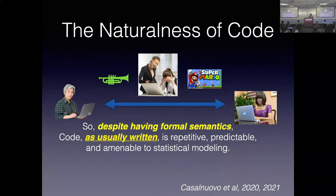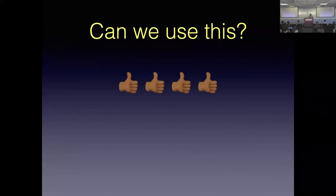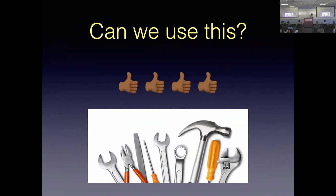That's the key observation: there are basically two channels that code operates in, and one of them is noisy. The other one is completely reliable. If you write code, the computer knows exactly what it means every time. But it's not the same for human beings. So despite having formal semantics, code as it's usually written is amenable to statistical modeling. There's a series of papers that touch on this angle. One simple way to think about it: the variable 'i' is very ordinary and mundane to everybody, but code with a weird naming convention means exactly the same thing — most people wouldn't write that.